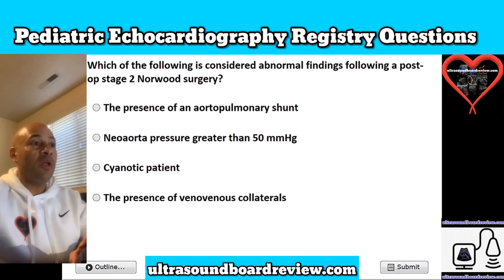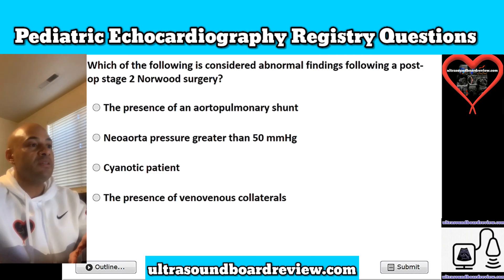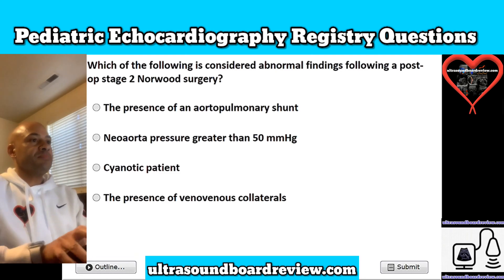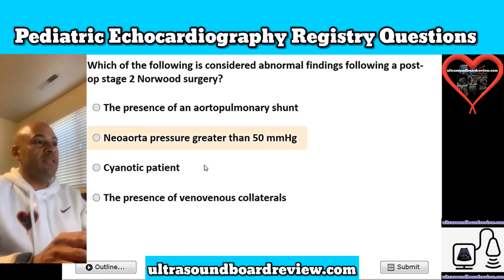Question 7. Which of the following is considered an abnormal finding following a post-op stage 2 Norwood surgery? Is it A, the presence of an aortopulmonary shunt; B, neo-aorta pressure greater than 50 millimeters of mercury; C, cyanotic patient; or is it D, the presence of veno-venous collaterals? The answer is B, neo-aorta pressure greater than 50 millimeters of mercury.